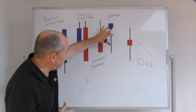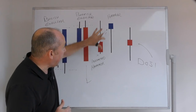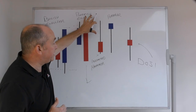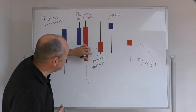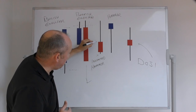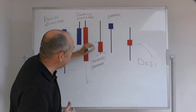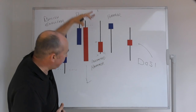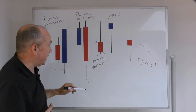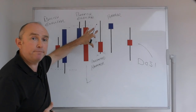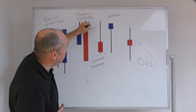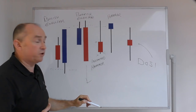Then you've got the hammer candles — the inverted hammer and the hammer candle. The inverted hammer shows that the sellers were in control: the market opens, moves up, but then closes right back down. It opens here, closes here, and then the sellers take control and push price back down for a lower close than where it opened. This is a very bearish, rejection candle — it's rejecting a level up here, which could indicate a move to the low side.